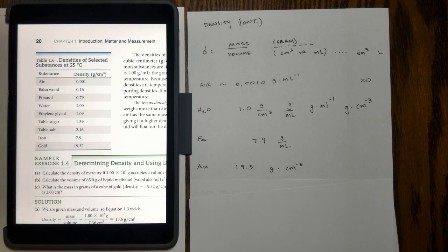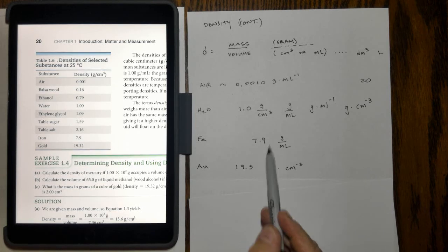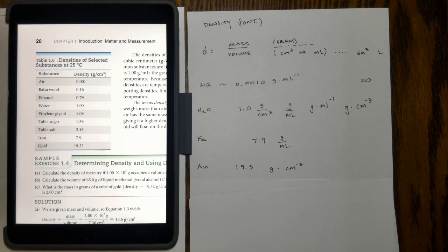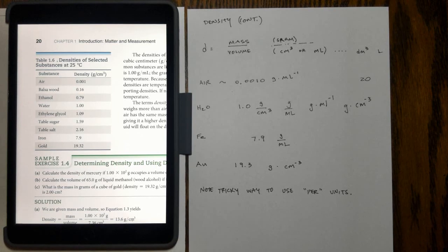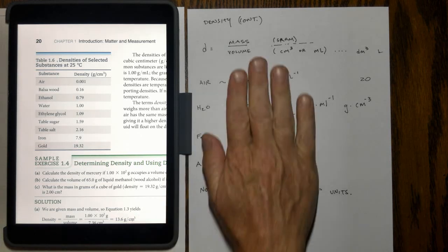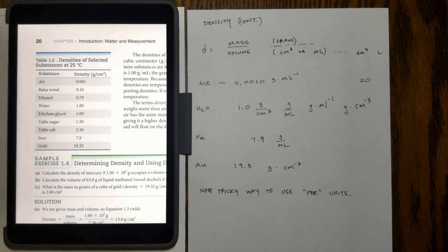But if iron and gold were liquid, like heated up until they both melted, the iron would float on top of the liquid gold. Gold has one of the highest densities of substances in the world. Note the tricky way to use the per units. You can see that the negative exponents mean per that amount. We'll continue next with a few example problems of density, mass, and volume.